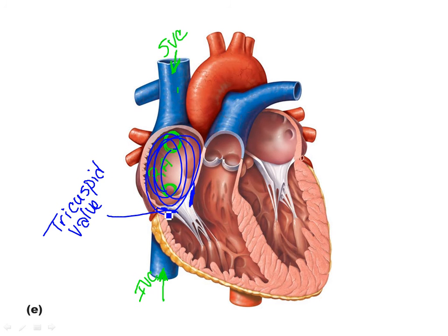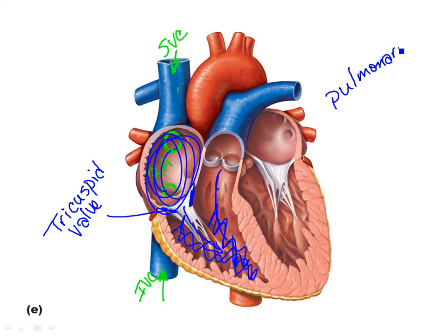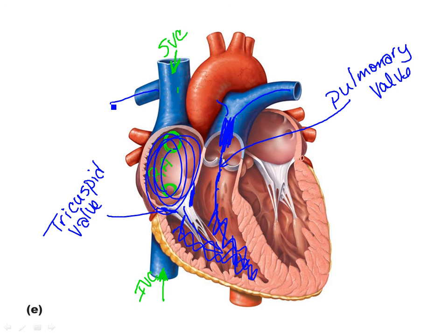When the right ventricle fills, it pushes against the pulmonary valve. Remember 'pulmonary' refers to the lungs. The pulmonary valve opens and that deoxygenated blood fills the pulmonary trunk, then goes into the left and right pulmonary arteries and out to the lungs. When we get out to the lungs, carrying deoxygenated blood, we drop off CO2, pick up O2, and now that blood is oxygenated again.